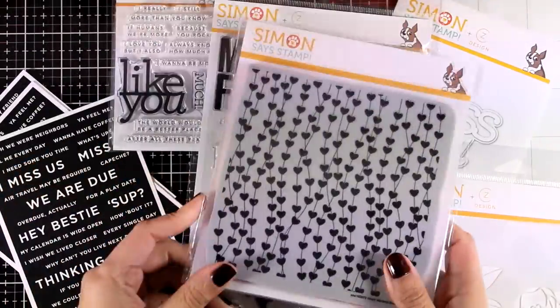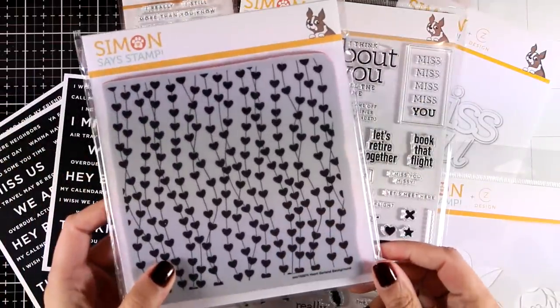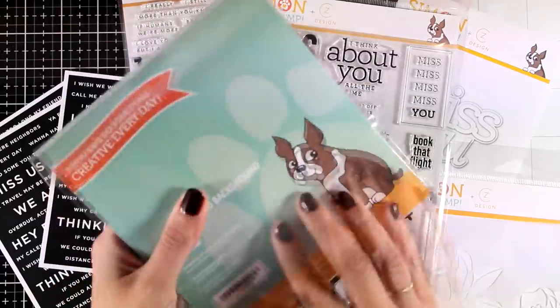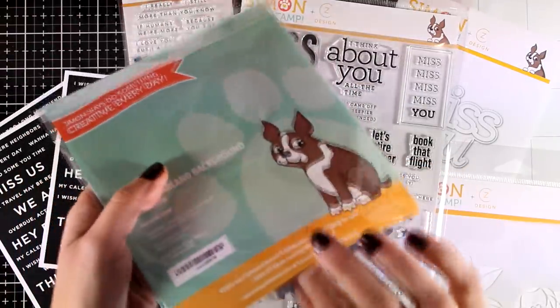It is called Hi Bestie and I decided to play with this cling stamp with all those hearts. I think it is absolutely beautiful and I will create three different cards using this stamp. So it's a one stamp, three ways video.